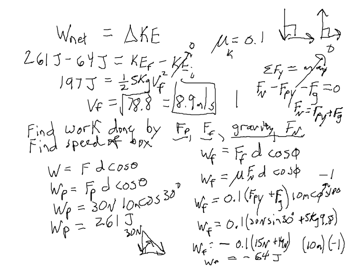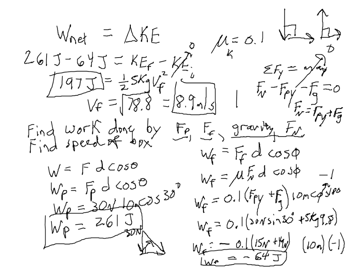To summarize: the work due to the push is 261 joules, the work due to friction is negative 64 joules, the net work on the box is 197 joules, and therefore the final speed of the box is 8.9 meters per second. That is an example of how you can use the work-energy theorem in situations where there's more than one force acting on the system.